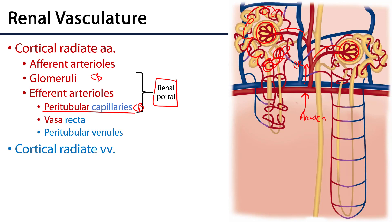The vasa recta are specialized vessels that are essentially elaborations of peritubular capillaries surrounding the nephron loops of juxtamedullary nephrons. They are involved in moving water out of the medulla to create a hyperosmotic gradient within the medulla, to continue pulling water out from the nephron loop. Peritubular veins then feed into cortical radiate veins, which feed into arcuate veins, mirroring the hierarchy of the arteries that supplied the nephrons.